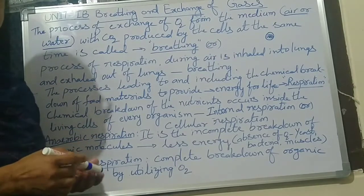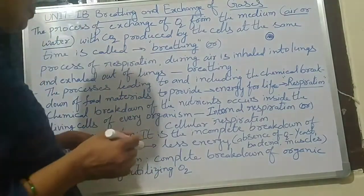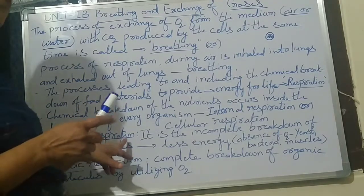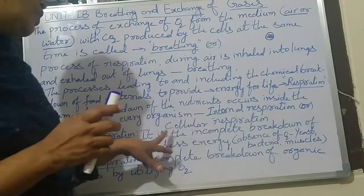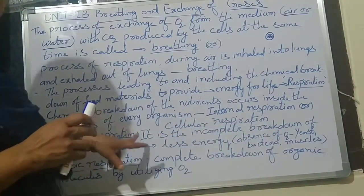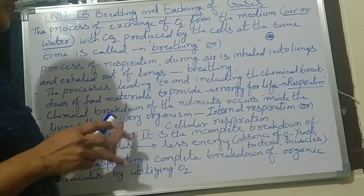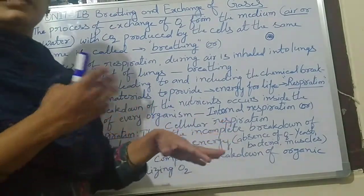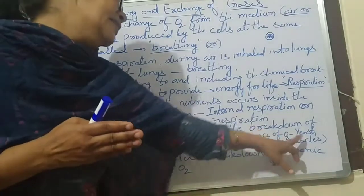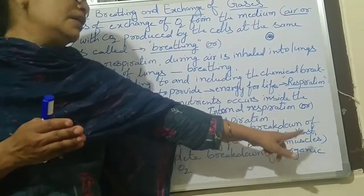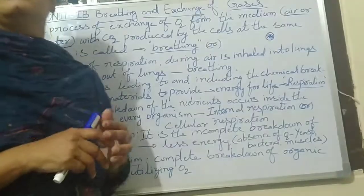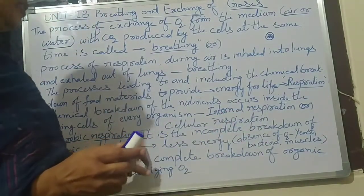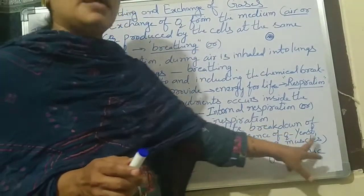Two types of respiration occur in different animals: anaerobic respiration and aerobic respiration. Anaerobic means in the absence of oxygen — even without oxygen, respiration occurs, but it is an incomplete breakdown of organic molecules, releasing less energy. Examples of anaerobic respiration include yeast, bacteria, and muscles, which can lack oxygen yet still respire.